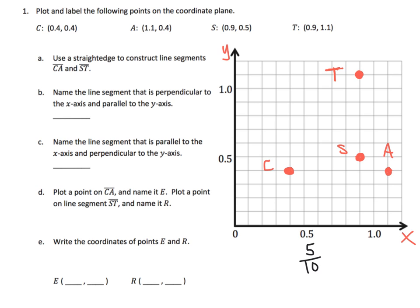So now that we've plotted our points, now we're basically just going to go through all these directions. Use a straight edge to construct your line segments. This thing, we need to recognize that's the line segment CA. Line segment means the line isn't going to go forever. So they want us to just use a straight edge to go from C to A, and that's it. And then they also want us to construct a segment that goes from S and T.